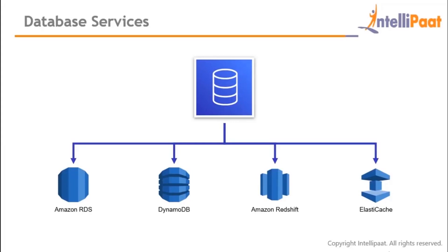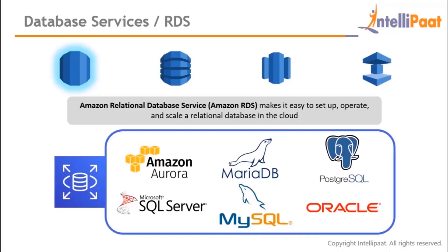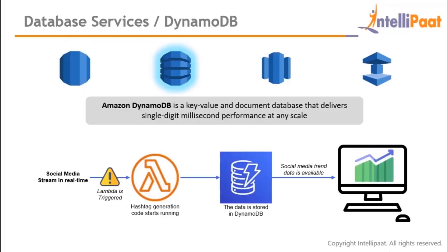Under database services, four important ones are covered. First, Amazon RDS (Relational Database Service) makes it easy to set up, operate, and scale a relational database in the cloud. RDS offers six database options: Amazon Aurora, MariaDB, PostgreSQL, Microsoft SQL Server, MySQL, and Oracle Database. You can use any of these just as you would in a local system.